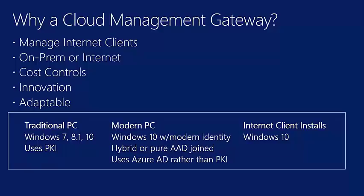One change introduced in Config Manager 1706 was the ability to automatically do a client install through the Cloud Management Gateway — meaning you don't have to have the client on the intranet first; you can install it over the internet. The CMG is adaptable to your needs and handles traditional PC management: Windows 7, 8.1, 10, and server operating systems all work great with it.